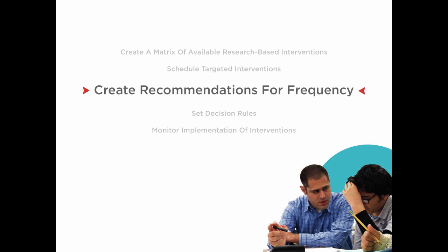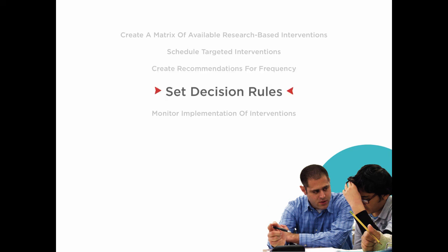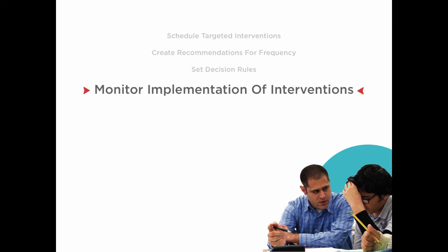Create recommendations for the frequency of interventions and progress monitoring data collection. Some interventions will require more frequent implementation and progress monitoring. Remember to create a continuum of interventions so that the frequency of the intervention matches the student's needs. It's important to determine decision rules for when interventions will be initiated, changed, or discontinued. Make sure procedures are in place to monitor whether interventions are being implemented with fidelity.